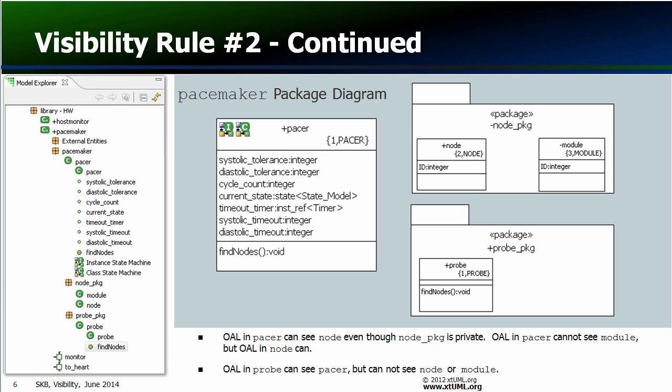Using the same rules, NodePKG is not visible to the Probe class. Thus, OAL in Probe can see the public Pacer class one level up, but it cannot see NodePKG because NodePKG is private. And therefore, it cannot descend into NodePKG and see either class — Node or Module.